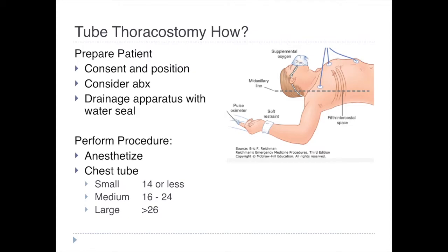How are we going to do the procedure? First, we should prepare the patient. If it's non-emergent, we can obtain consent. We're going to position the patient, consider soft restraints, put on a pulse oximeter, put them on supplemental oxygen, and re-identify the space. Consider antibiotics — there's not much evidence for prophylactic antibiotics outside of trauma, but if we are going to give them, we should give a first-generation cephalosporin just before making the skin incision, and prepare the drainage apparatus with the water seal.